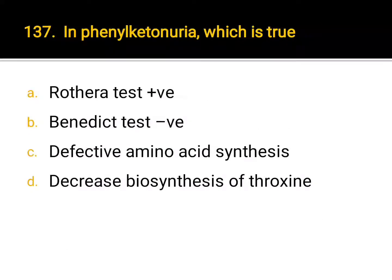In phenylketonuria, which is true? A. Rothera test positive, B. Benedict's test is negative, C. defective amino acid synthesis, D. decreased biosynthesis of thyroxine. Correct answer: D. Decreased biosynthesis of thyroxine.